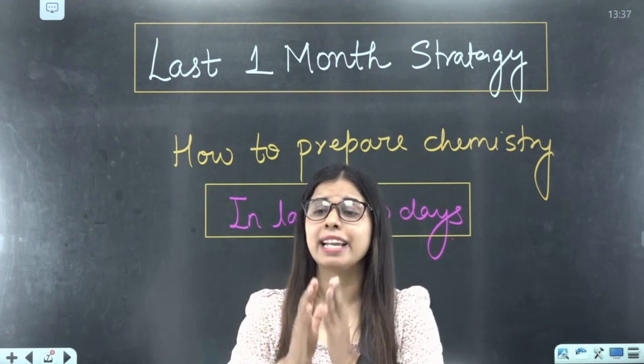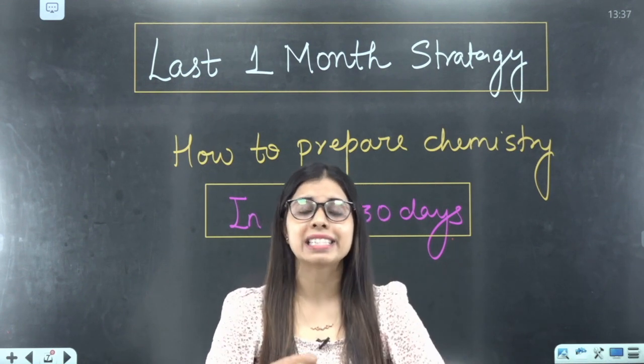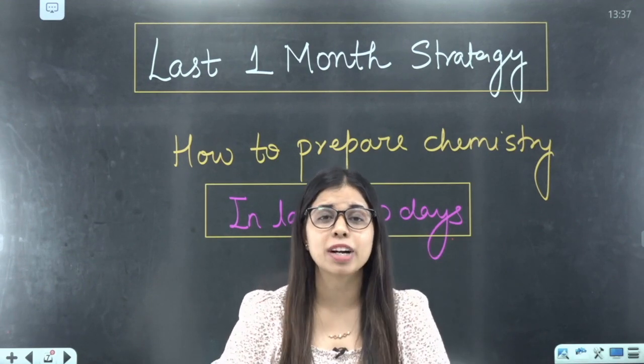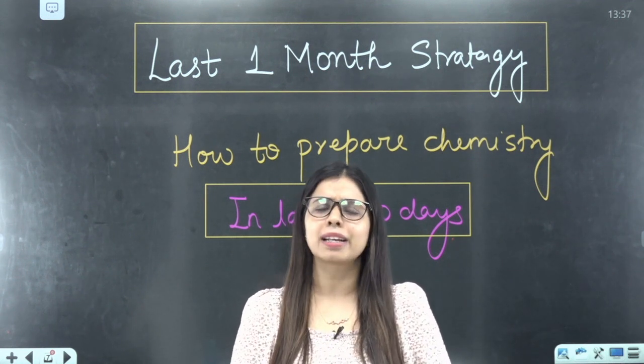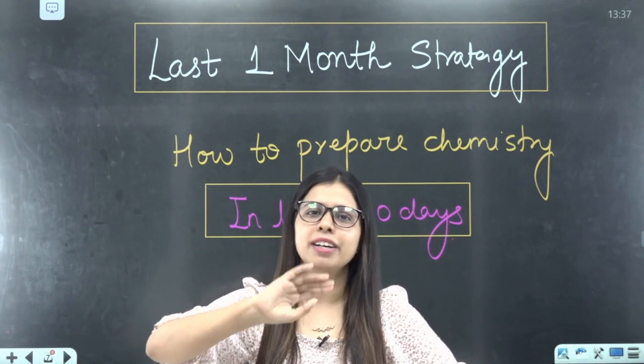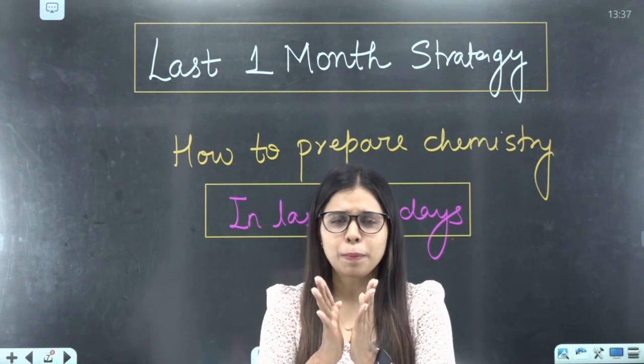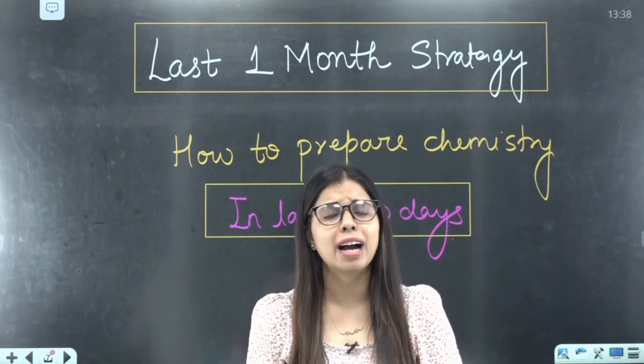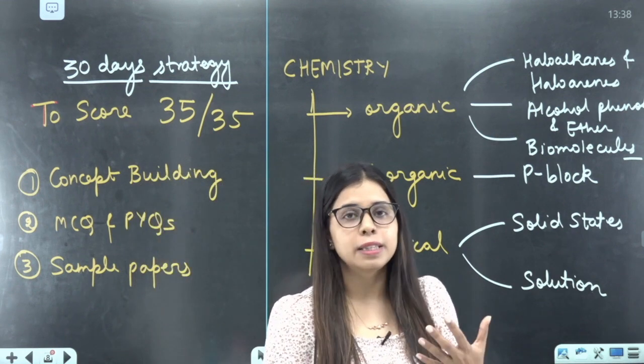That's why I have come here to tell you a proper way to prepare. What kind of things you have to do? Which book to follow? What kind of MCQs you have to practice? Because I want you to score 35 out of 35. If you scored in 35 theory, then your teacher will give you 15 out of 15 in practicals, and you will be able to score full marks. Make a proper schedule for the next 30 days and work better in term 1.